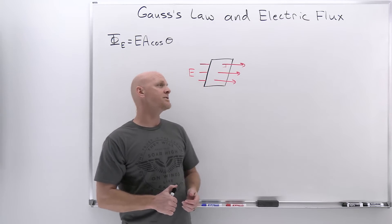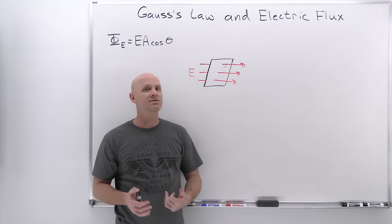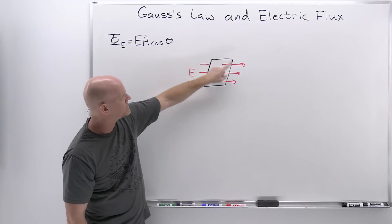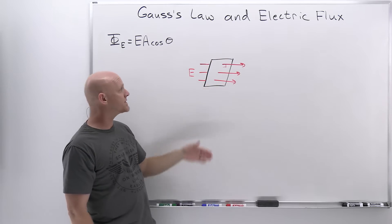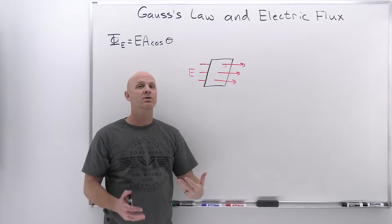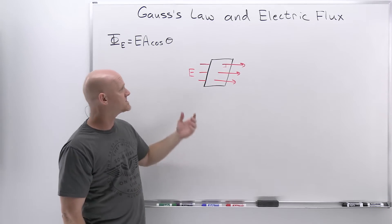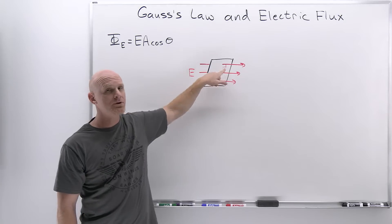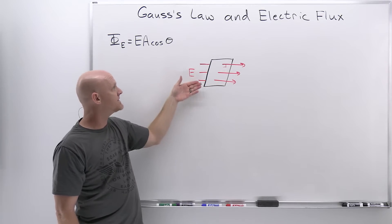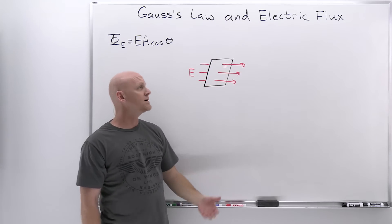Electric flux is really a measure of the electric field passing through a surface. We can see a parallelogram with electric field lines passing through it, and there will be a corresponding electric flux associated with that. As long as the field lines are coming through perpendicular to the surface, it really is just the magnitude of the electric field times the area of the surface.